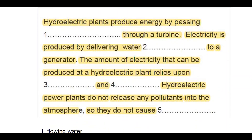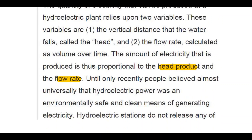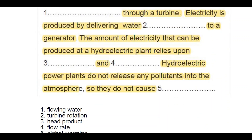The third and fourth questions ask: 'The amount of electricity that can be produced at a hydroelectric plant relies upon something and something.' The fifth line of the passage contains: 'The amount of electricity that is produced is thus proportional to the head product and the flow rate.' So the answers are 'head product' and 'flow rate.'